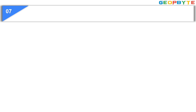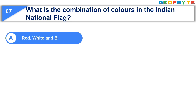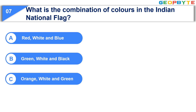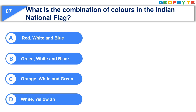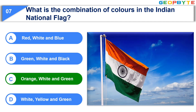Moving to the seventh question: What is the combination of colors in the Indian national flag? Option A, red, white and blue. Option B, green, white and black. Option C, orange, white and green. Option D, white, yellow and green. Your time starts now. Your time is up and the correct answer is Option C, orange, white and green.